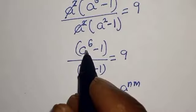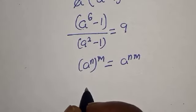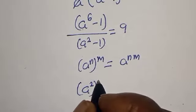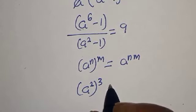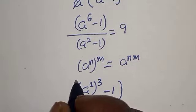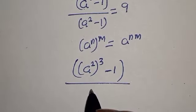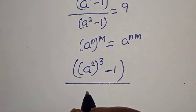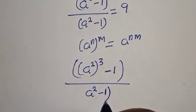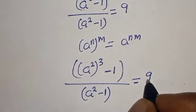Using that rule, a raised to power 6 can be written as a squared to the power of 3. So the expression becomes: a squared to the power of 3, minus 1, divided by a squared minus 1, is equal to 9.